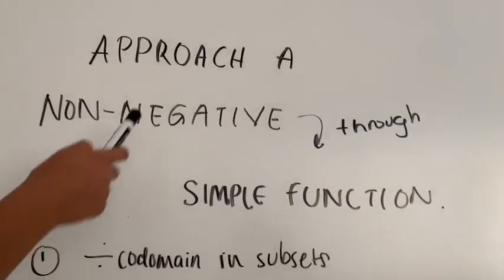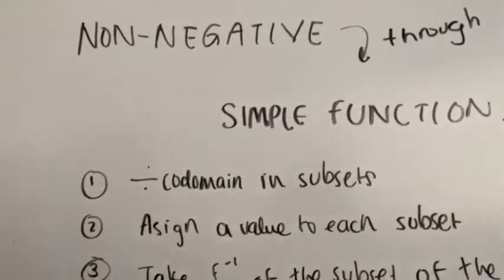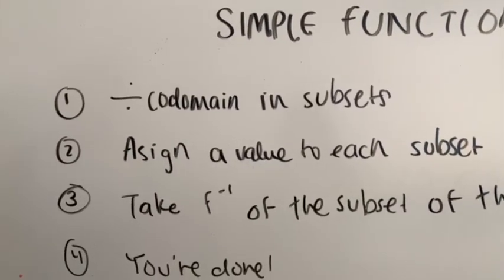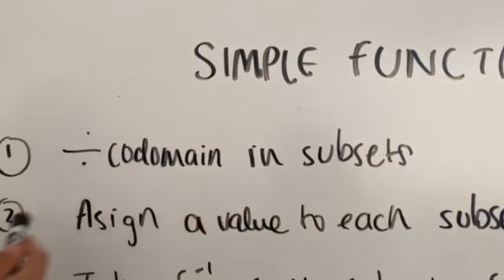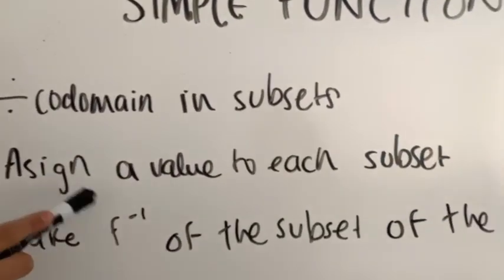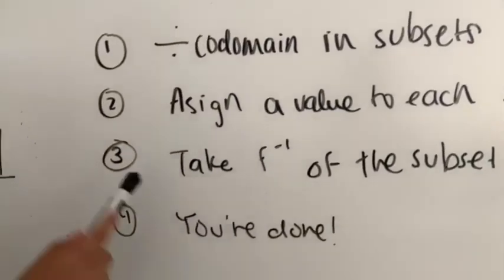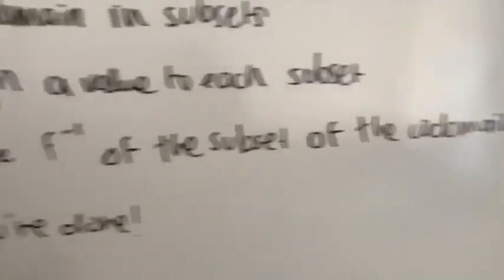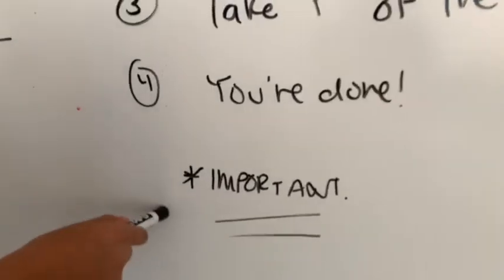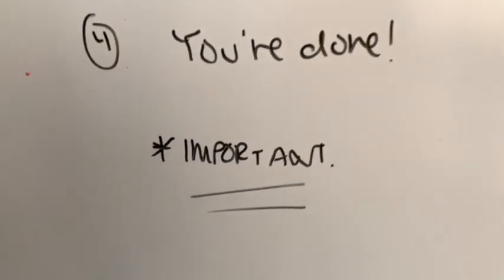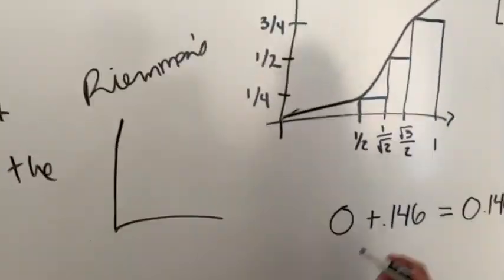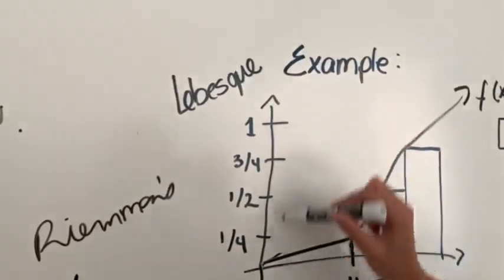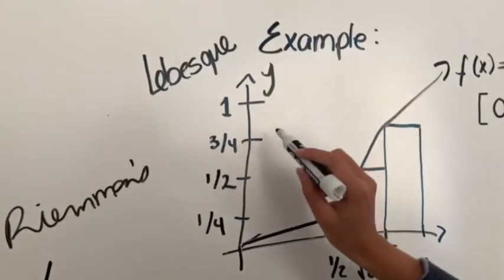How do we approach a non-negative function through a simple function? Step 1: divide the codomain into different subsets. Step 2: assign a value to each subset of the codomain using the minimum value. Step 3: take the inverse image of the subset of the codomain. The integral of the limit of all these simple functions will be the integral we are trying to approach. In the Riemann sum, we divide values in x first, but here we divide the codomain — that is y — into subsets.